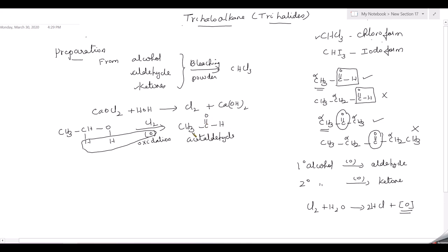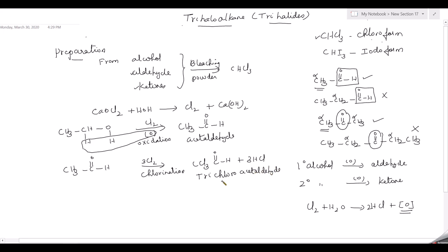The acetaldehyde then undergoes further chlorination with chlorine (acting as a chlorinating agent). The three hydrogens of the CH3 group are replaced by three chlorine atoms, giving trichloroacetaldehyde (CCl3CHO) — also called chloral — along with three molecules of hydrogen chloride. So you are adding a total of six chlorine atoms overall. Chloral has the structure CCl3CHO: a CCl3 group attached to an aldehyde group.